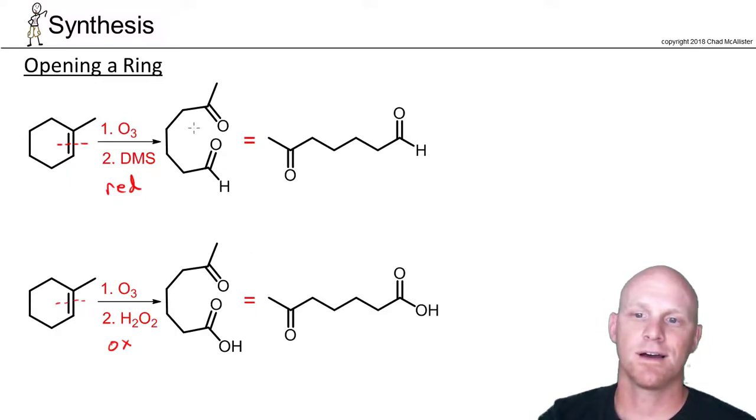If we cleave that bond in half we get a carbonyl on either side. On this side we get a ketone. On the other side with it having a hydrogen will be an aldehyde under reducing conditions or it will be a carboxylic acid under oxidizing conditions.